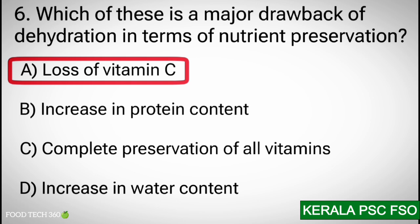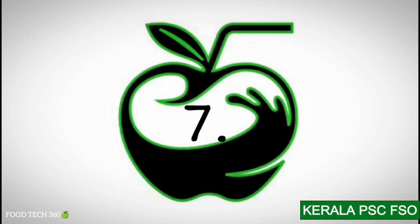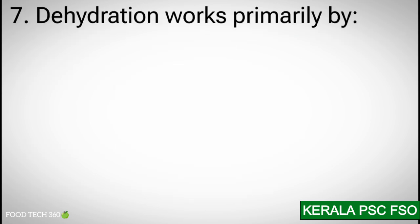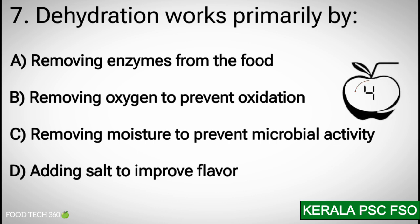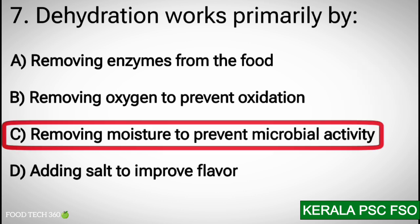Q7: Dehydration works primarily by — Options: A. Removing enzymes from the food. B. Removing oxygen to prevent oxidation. C. Removing moisture to prevent microbial activity. D. Adding salt to improve flavor. Correct answer: C. Removing moisture to prevent microbial activity.